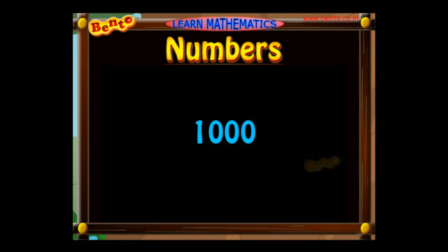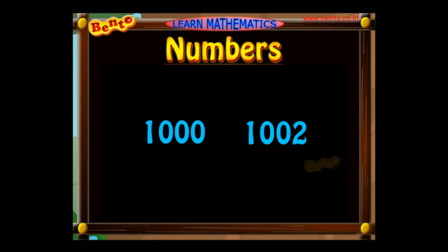The number next to 999 is 1000 — it is the first four-digit number, read as 1000. The second number is read as 1002 as it has 1000 and a 2 in it. 1000 and 1002 are examples of a four-digit number.